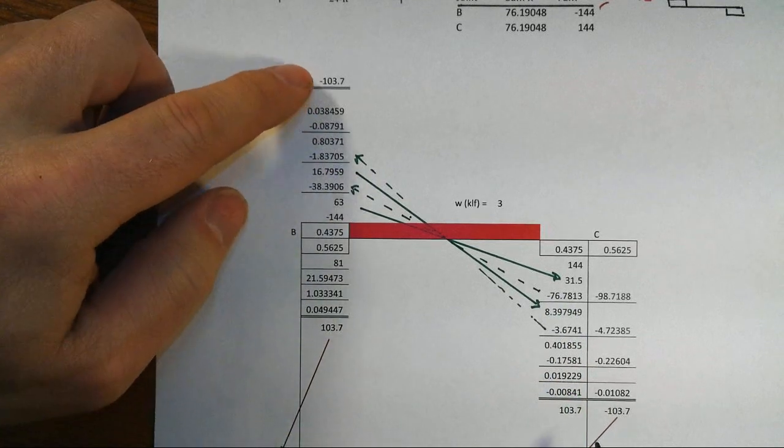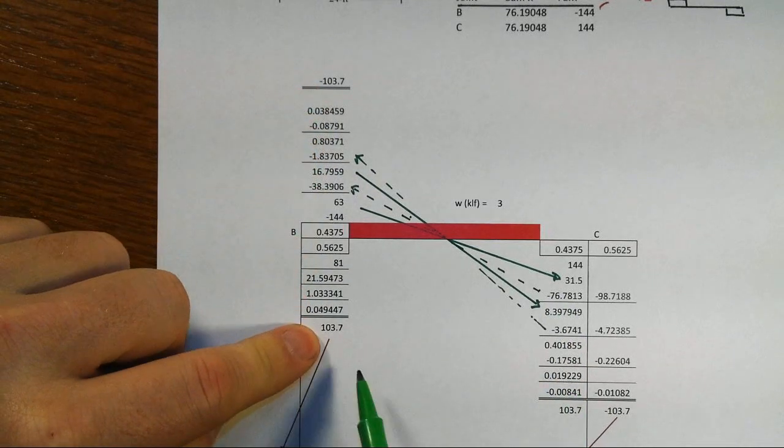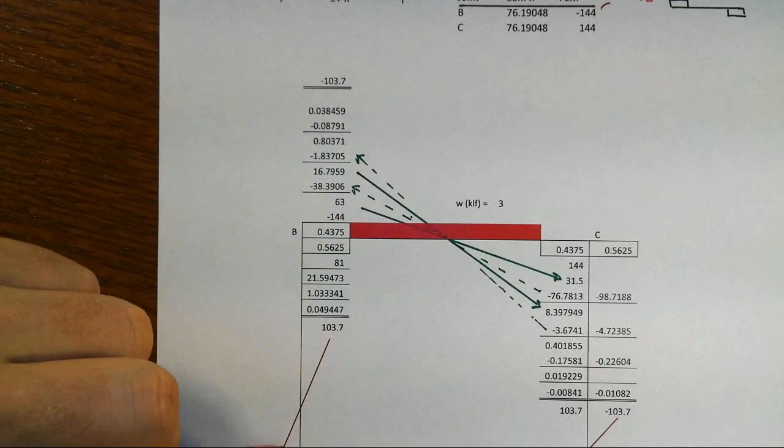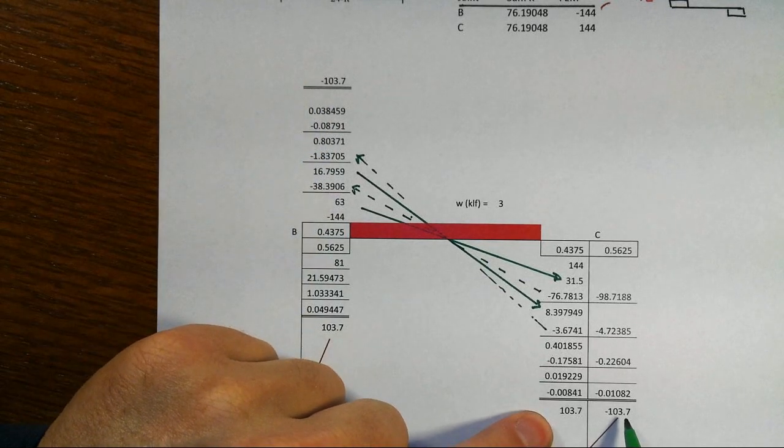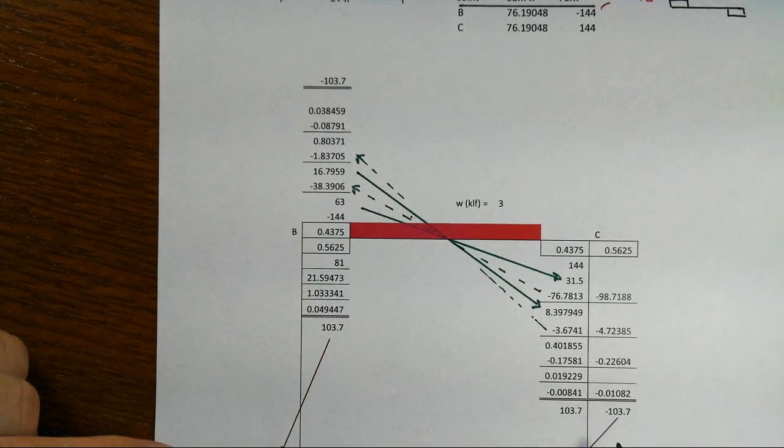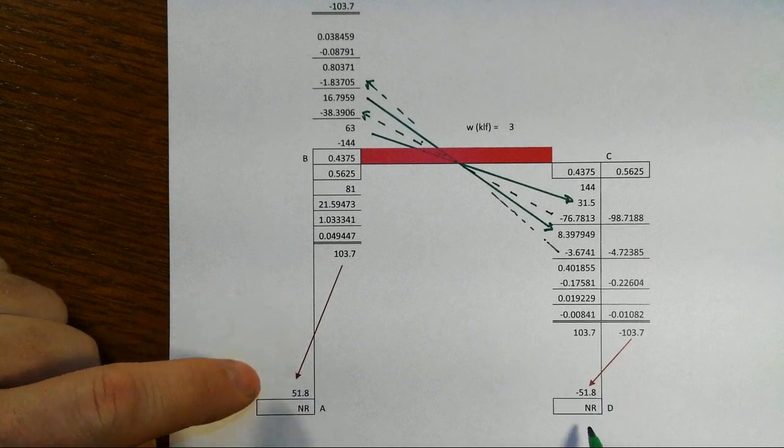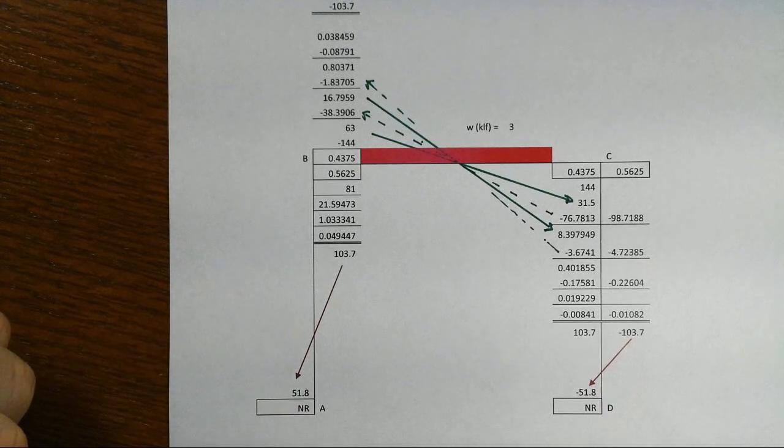That gives us the minus 103.7, and 103.7 over here at joint B. Equal opposite moments, they better be. Same kind of thing happens at C, the signs are changed. And then I do this carry over to the base of the column. There you go.